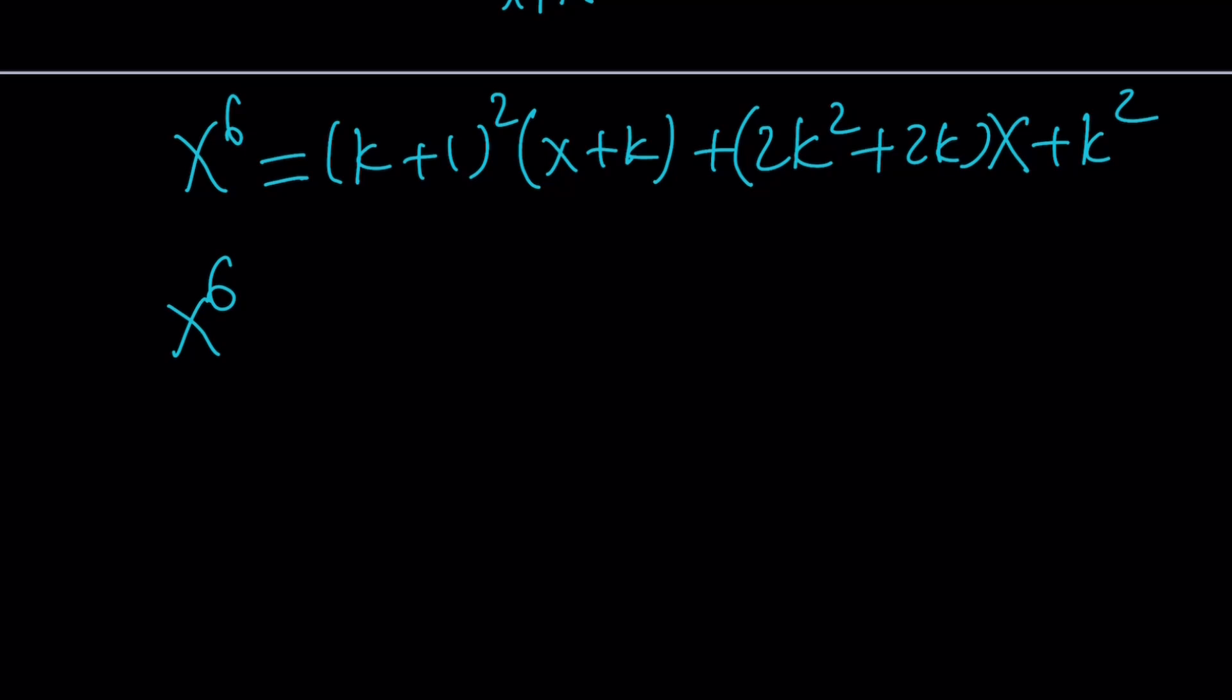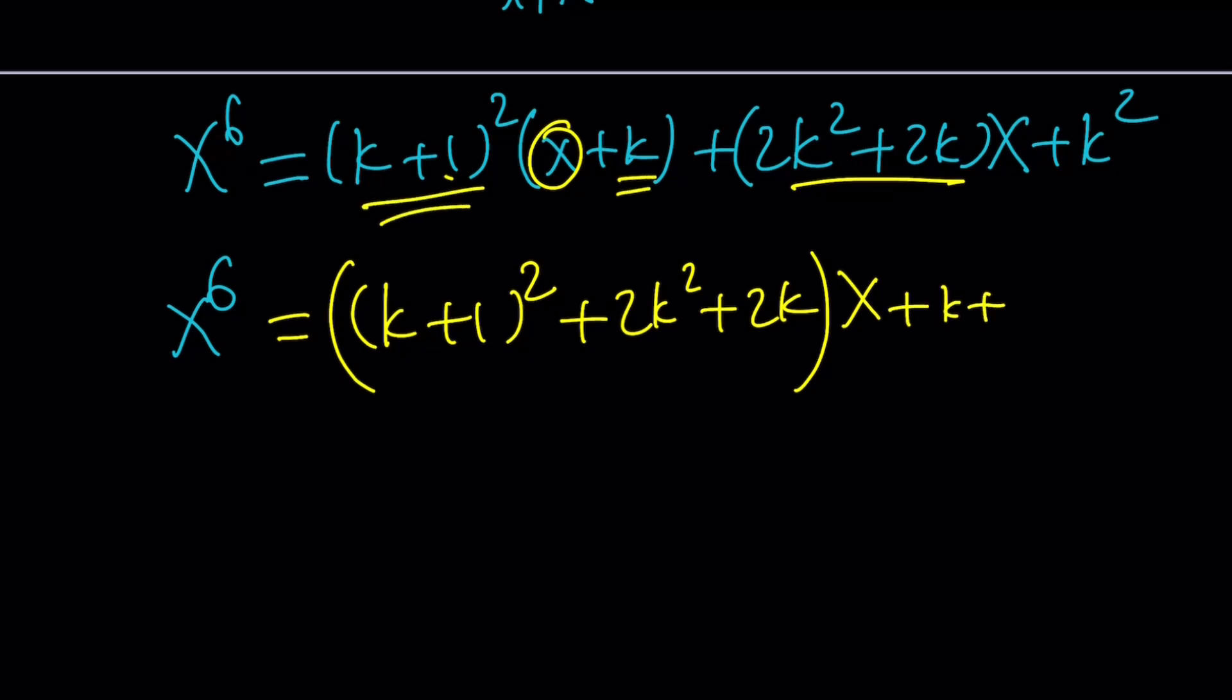Take a look at the coefficient of x first. It's (k + 1)^2 plus 2k^2 + 2k. That's the coefficient of x. What about the constant term? It's (k + 1)^2 times k plus k^2. Great.